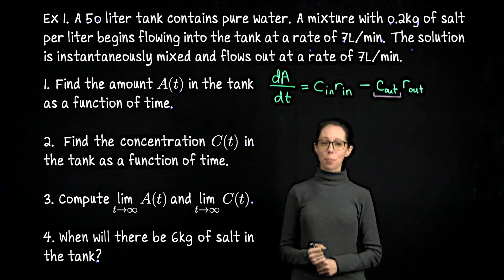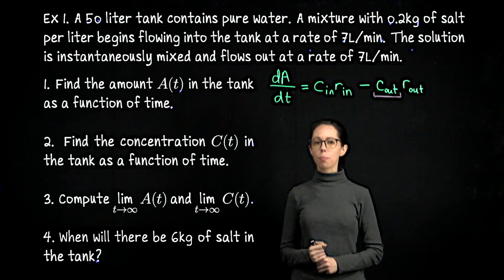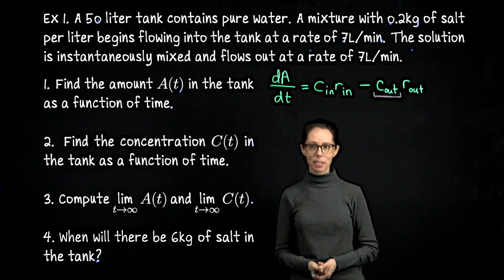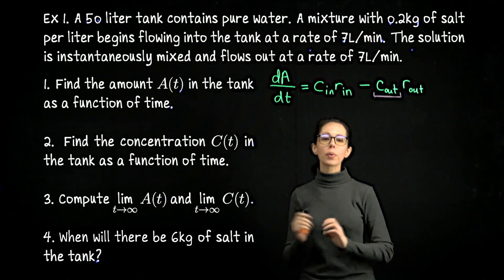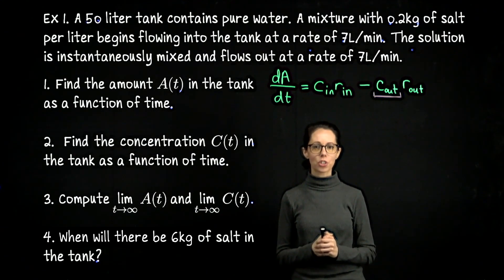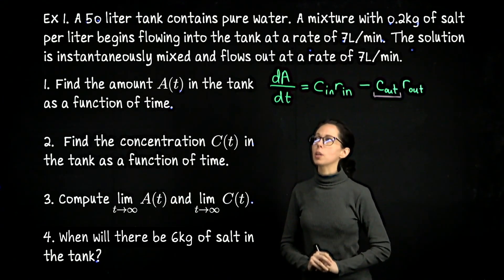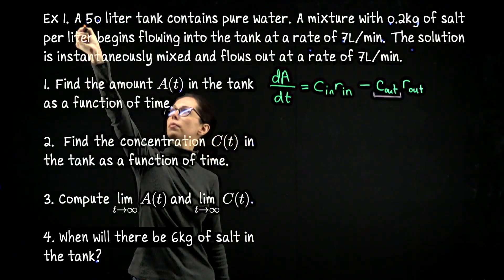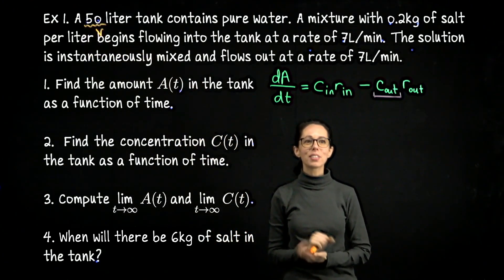Here's our first example. A 50-liter tank contains pure water. A mixture with 0.2 kilograms of salt per liter begins to flow in at 7 liters per minute. The solution is instantaneously mixed and flows out at 7 liters per minute. Let's identify the key pieces of information. The volume of the tank is 50 liters.